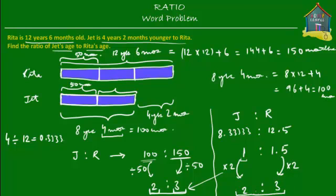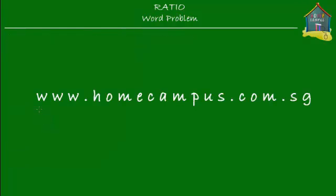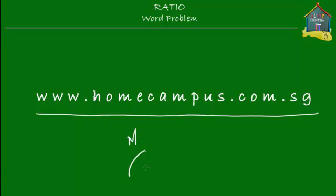Their ages are still in the same ratio, 2 to 3, which is Jet's age to Rita's age. Well that's it. Alright, hope you understood this word problem and hope you'll now go and solve some other word problems as usual at www.homecampus.com.sg. Don't forget to practice because practice makes perfect. This is Em signing off for now. Bye-bye.